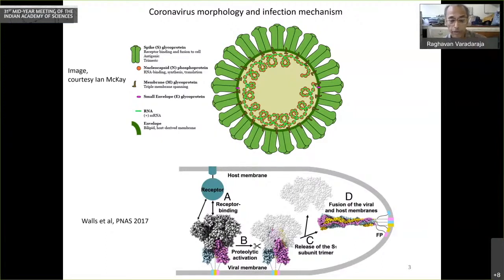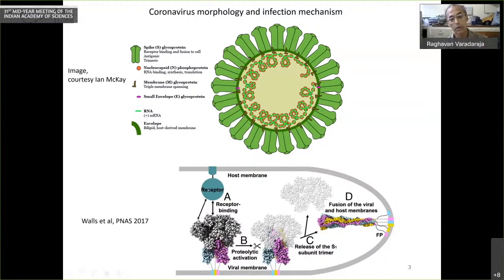Obviously, if you want to block this process, the most obvious way would be to have, in a vaccine, antibodies that bind to the spot on the spike protein where the receptor binds and prevent that process from happening.